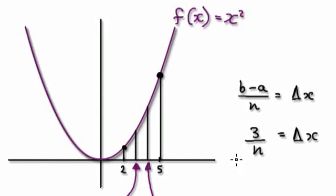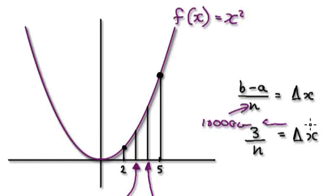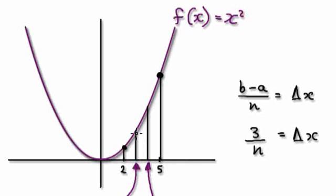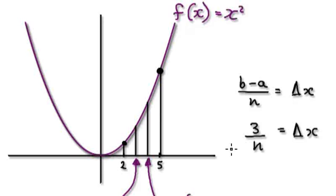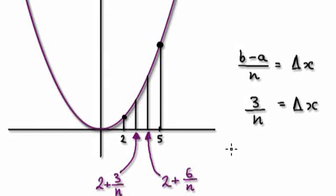Later on we're going to increase the number of strips to, let's say, 1,000 or maybe an astronomically large number — for this diagram only, n happens to be 3 strips.